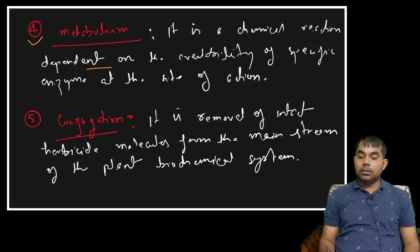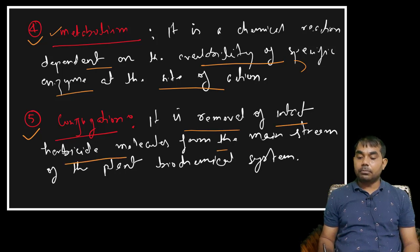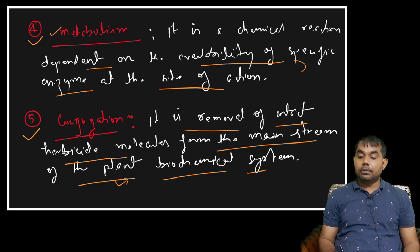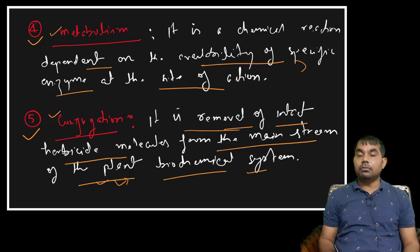Metabolism as a resistance mechanism is a chemical reaction dependent on the availability of a specific enzyme at the site of action. That enzyme metabolizes the herbicide into a non-toxic form, which is the reason for resistance development in the weed biotype. Conjugation involves the removal of intact herbicide molecules from the mainstream of the plant's biochemical system, so the herbicide cannot kill the weed. This is also a recognized resistance mechanism.